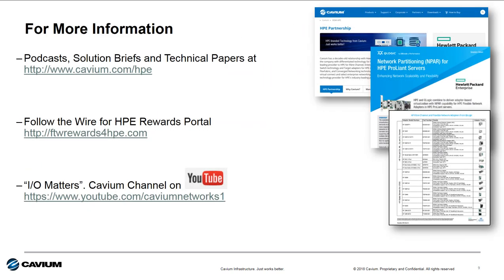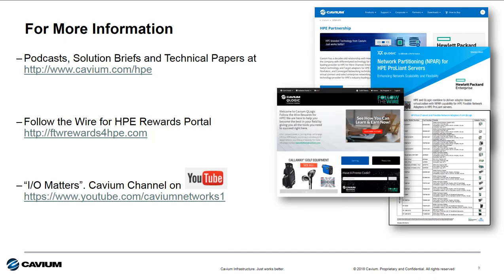For information on these technologies and more, access the HPE microsite at www.cavium.com/hpe. Here you'll find lots of information on the products we talked about, including white papers, data sheets, technology briefs, and more.